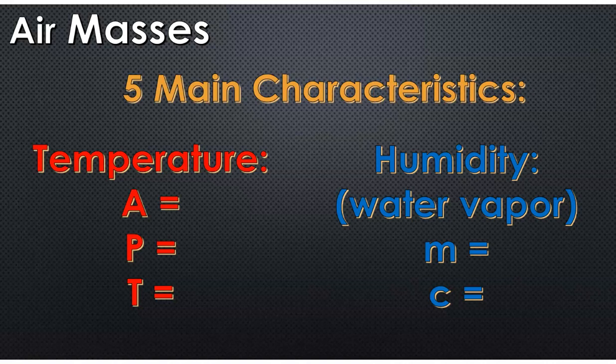The temperature A is based on the Arctic. So anything around the Arctic would have this certain temperature. Then, just below that, around the 50 to 70 degree latitude mark, you'd have the P, which is polar, and then T, which is anything further south in terms of the northern hemisphere, would be deemed tropical.